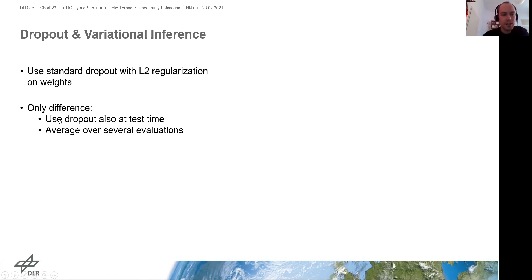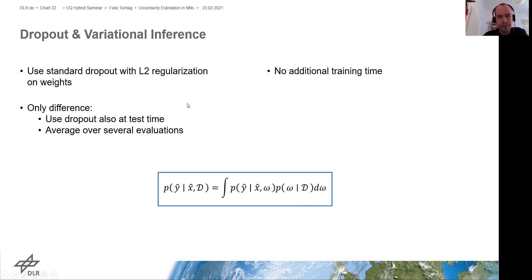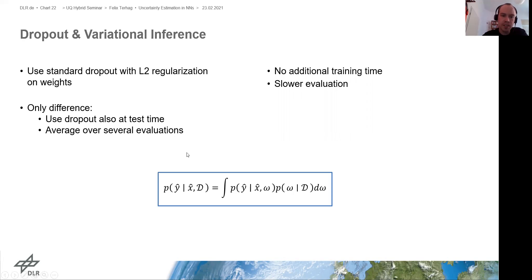L2 regularization is already built into most neural network packages anyway. So it turns out that if you just use standard dropout with L2 regularization on the weights, you can do dropout with variational inference. The only difference is we also use dropout at test time and average over several evaluations, because we are approximating the integral over all possible weights by sampling from this dropout distribution. There is no additional training time since dropout adds almost no overhead, and you often already use it anyway, but of course at test time the averaged evaluation is slower because you have to evaluate the network several times and average.